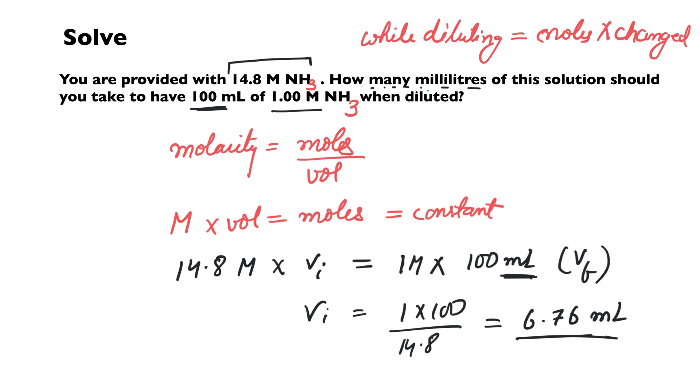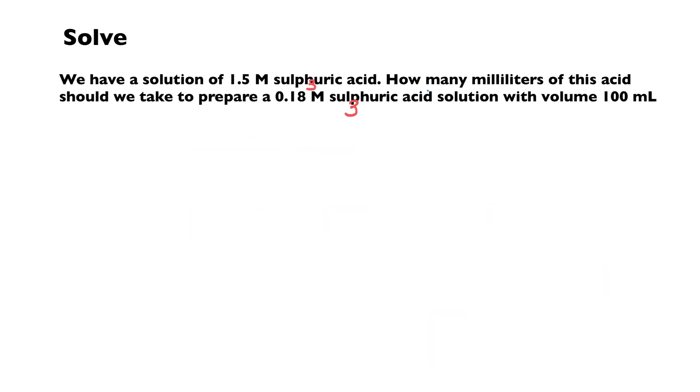Let's just solve one more problem with the same principle so that we have a fair idea. We have a solution of 1.5 molar sulfuric acid. Let's first write our principle: M initial times V initial equals M final times V final, because the number of moles have not changed.